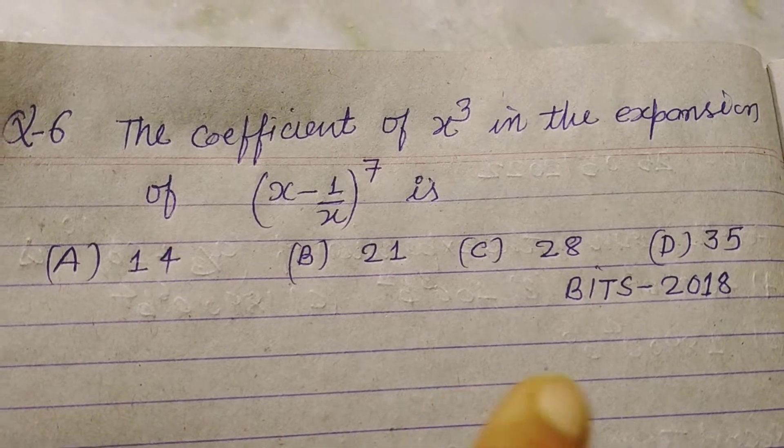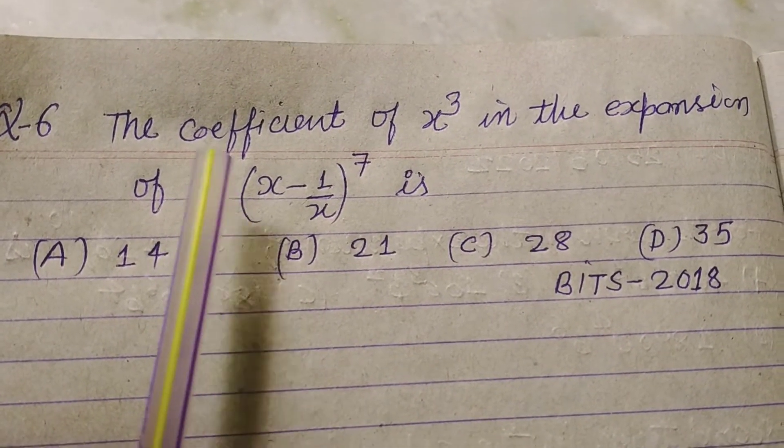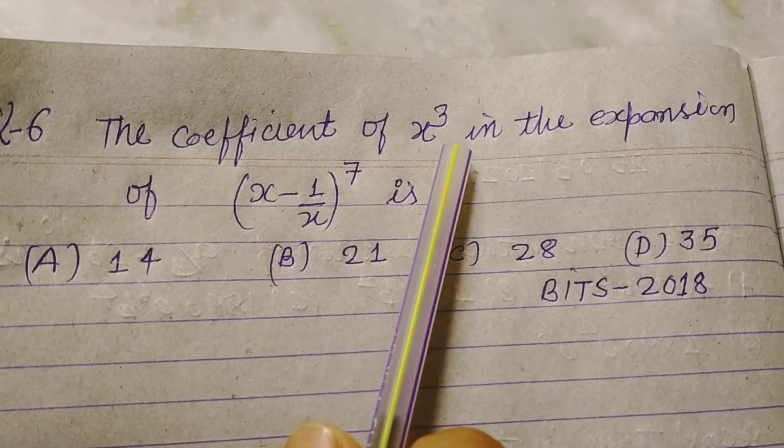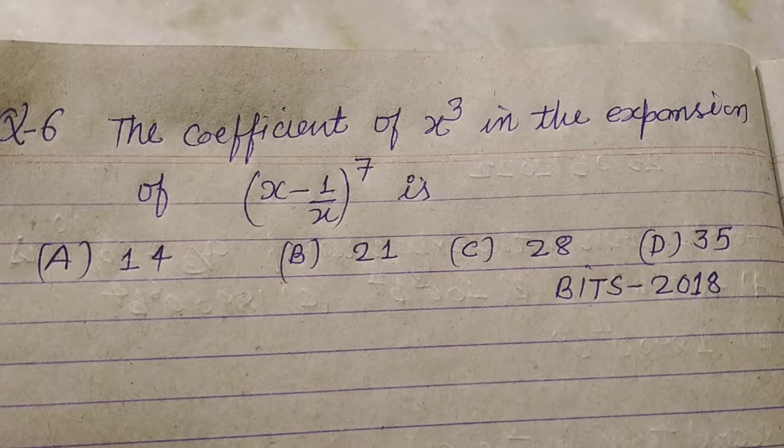Here is a question from Binomial Theorem asked in BITS 2018. The question is asking for the coefficient of x to the power 3 in the expansion of x minus 1 upon x, all to the power 7.